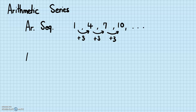For arithmetic series, we simply add up all these terms. So instead of having 1, 4, 7, 10, etc., we just add the terms together. This is what an arithmetic series looks like.